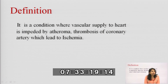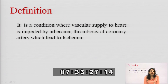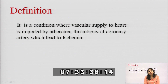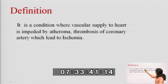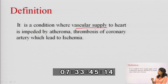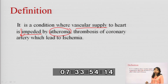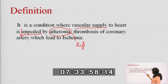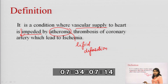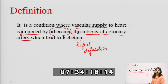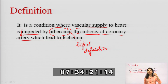First, the definition. We are discussing ischemic heart disease, so we must understand what ischemia is. Ischemia is a condition where vascular supply to the heart is impeded by atheroma or thrombosis of the coronary artery. Vascular supply means blood supply to the heart is decreased. This decrease is due to atheroma, which is lipid deposition in the blood vessels.